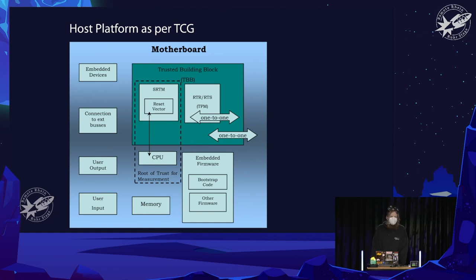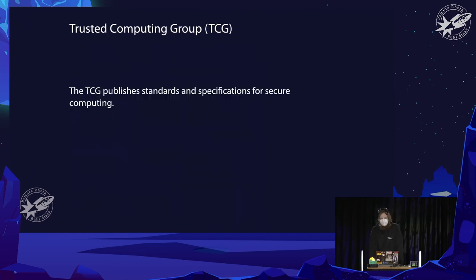The TCG — Trusted Computing Group — publishes standards and specifications for secure computing, and they are actually the ones who define the so-called TPM. Be aware it's more of a product name or marketing term in an industry sense. When we talk about security goals we're talking about confidentiality, integrity, and authenticity — keeping data secure, preventing undetected manipulation, and validating the source of data.